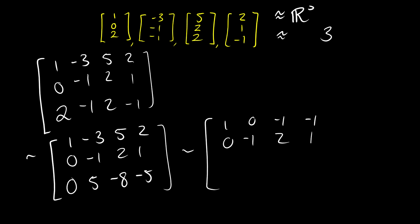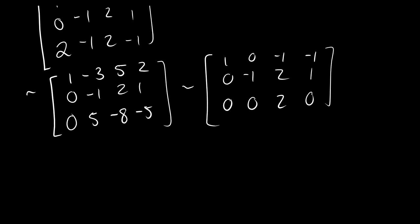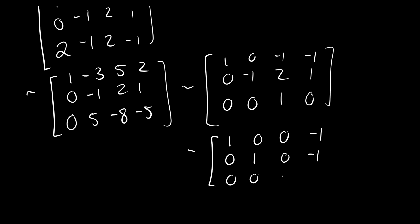We take row 3 and add 5 times the second row: 0, 0, 2, 0. We can divide the third row by 2 to get a 1 there. Continuing the row reduction, we get a clear row echelon form with entries 0, 1, 0, negative 1 and ultimately 0, 0, 1, 0, showing the reduced form clearly.